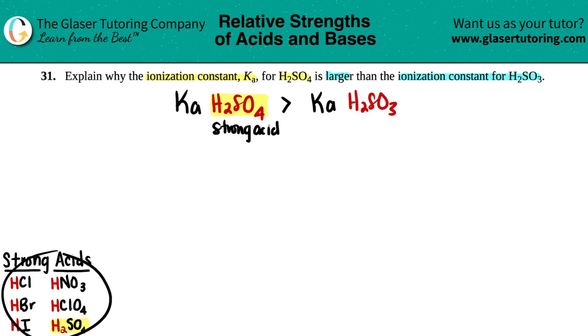H2SO3 didn't make the list. There's only a list of six. So H2SO3 would be classified as a weak acid. I know that it's an acid because it has those hydrogens in the front, but it's not on the list, so it's classified as weak.